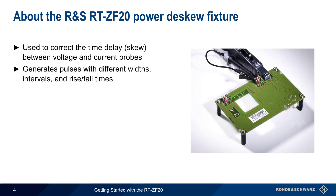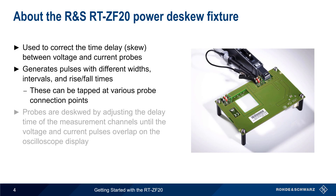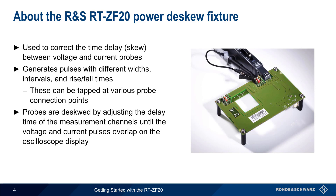This fixture generates pulses with different widths, intervals, and rise-fall times, and these signals can be tapped by both voltage and current probes at different connection points on the fixture. De-skewing is then performed by adjusting the delay time or the amount of skew on one or more measurement channels until the voltage and current pulses overlap on the oscilloscope display.